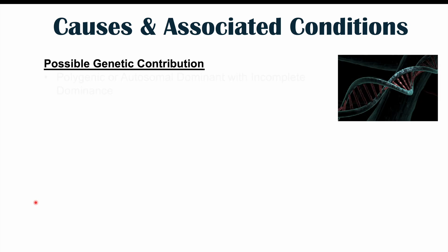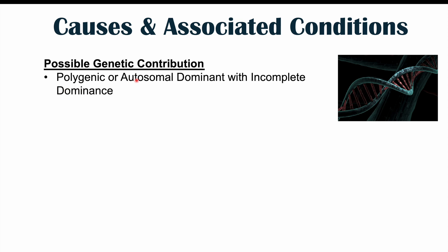Some potential causes include possible genetic contributions. It appears there is a polygenic or autosomal dominant effect with incomplete dominance. Polygenic means multiple genes may increase the risk. Autosomal dominant means you only need one copy of an affected allele to potentially present with this condition. However, incomplete dominance means not everyone with that allele will develop lingua plicata.